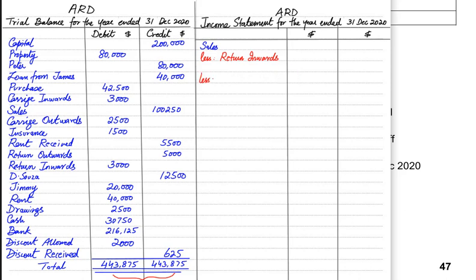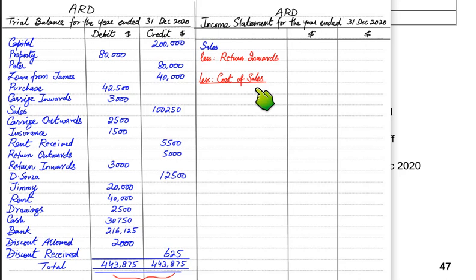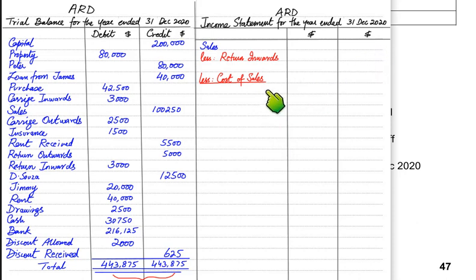Then we have cost of sales. Cost of sales is basically the amount that those goods actually cost the business — the cost price as opposed to the selling price. For example, if we are selling something for $100 and it cost the business $80, then $80 is the cost of sales.